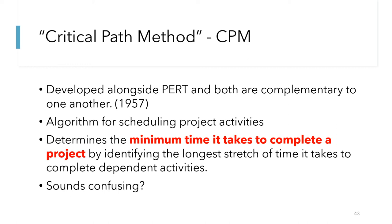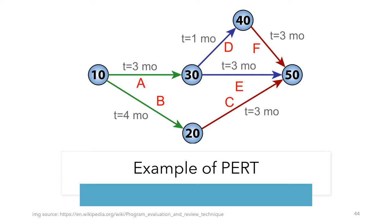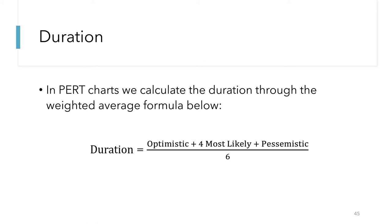This right here is a PERT diagram. This chart represents a seven-month project with five milestones connected by six activities. The milestones are represented in circles, the activities are the arrows labeled A through F, and T represents the number of months before reaching the next milestone. Looking at this diagram, we can see the Critical Path would take seven months for the project to be completed. To calculate the duration of tasks, we use a formula combining the optimistic, pessimistic, and most likely times. We multiply the most likely time by 4 to give it a higher weight, then divide the whole by 6 to get the average duration.